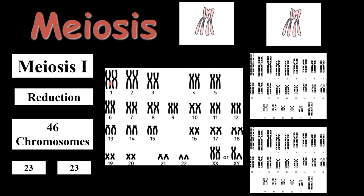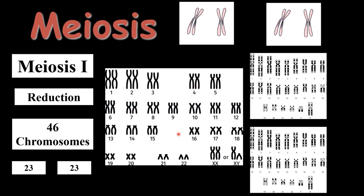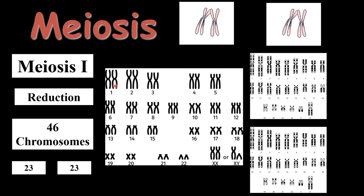These homologous chromosomes are the same in size and carry the same genes. In Meiosis 1, the homologous chromosomes — one paternal and one maternal — actually separate from each other independently. So 23 sets of chromosomes go to one cell and 23 chromosomes go to the other cell. That is how the homologous pairs are separated from each other.